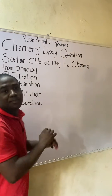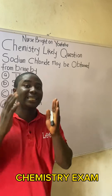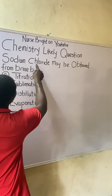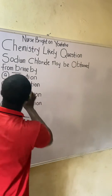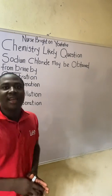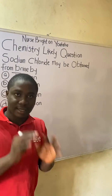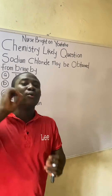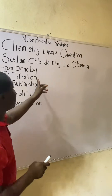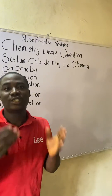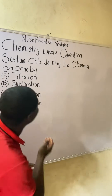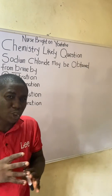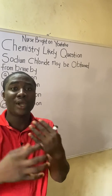If you came across this question in your chemistry exam, here is how to solve it — it is extremely easy. The question says: 'Sodium chloride may be obtained from brine by...' You can see different options, and these options are separation techniques, with the exception of option A, which is titration. To answer this question correctly, we have to understand what each of these techniques is about.